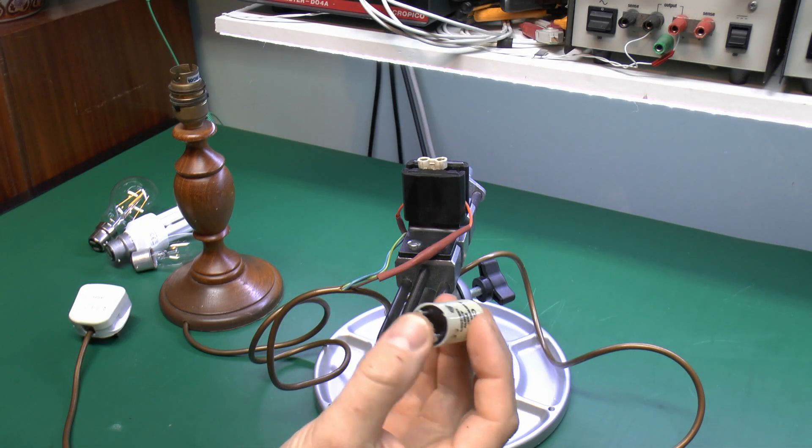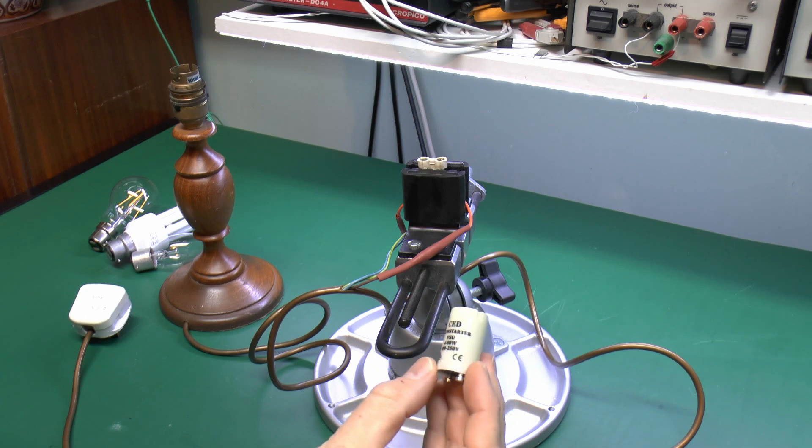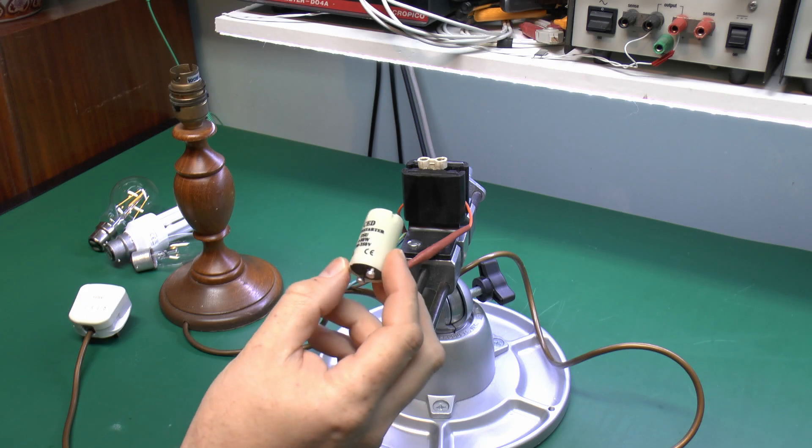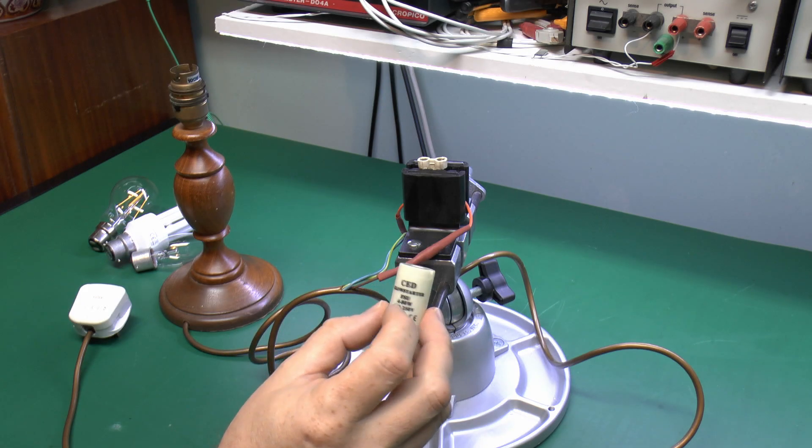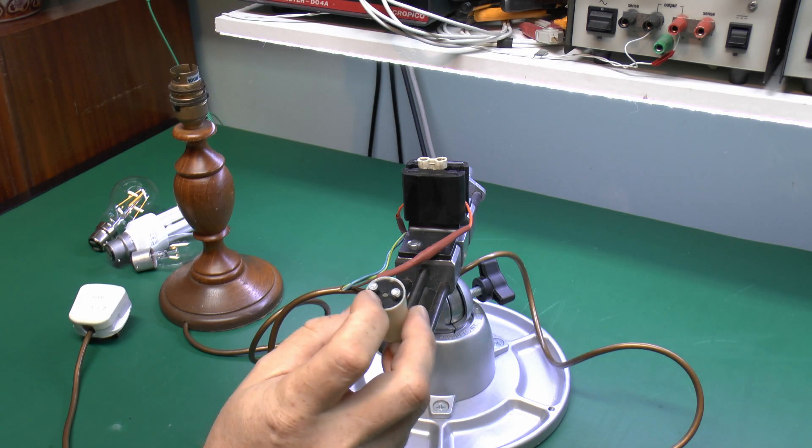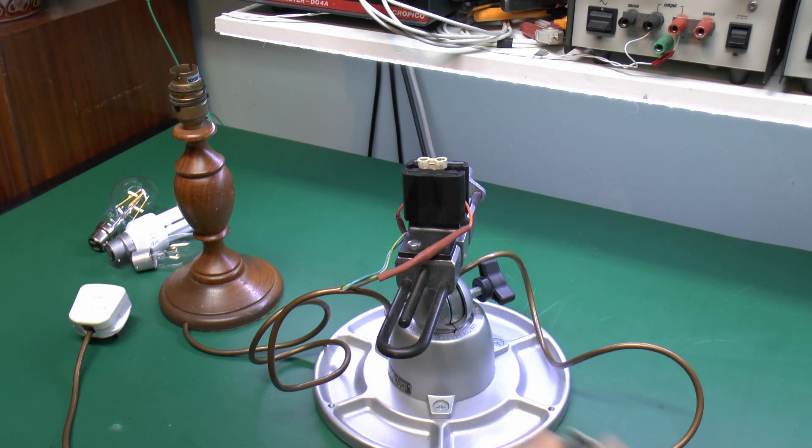So here's the actual starter. That's a fairly typical one, rated 4 to 80 watts. That's probably the most common type. In order to actually test this, we can't just simply connect this across the mains because as we saw in the previous video, inside here is essentially a tube which contains basically a switch. So if we just shove this on the mains, when the switch closed, it would essentially short out the supply and blow the fuse. So of course that's not very useful.